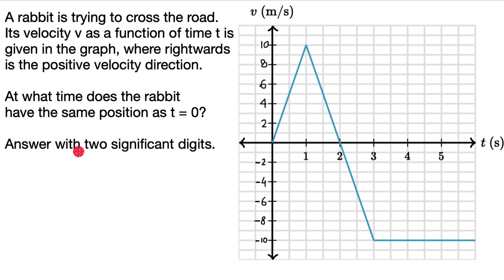Okay, hopefully we have given this a shot. Now let's try and break down this question — let's see what the question is trying to say. We have one rabbit which is trying to cross the road, and velocity v is given as a function of time t, and rightwards is the positive velocity direction.